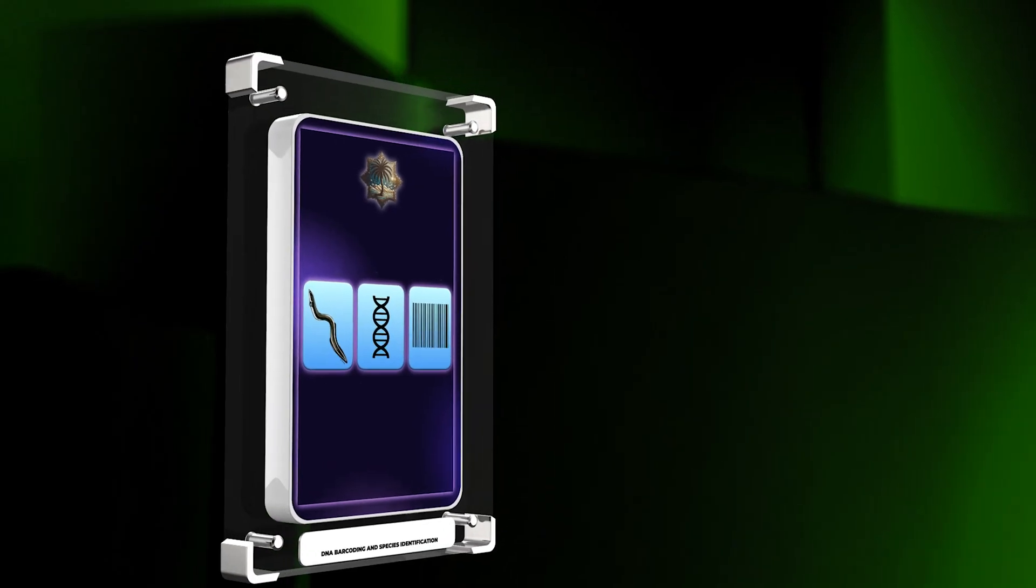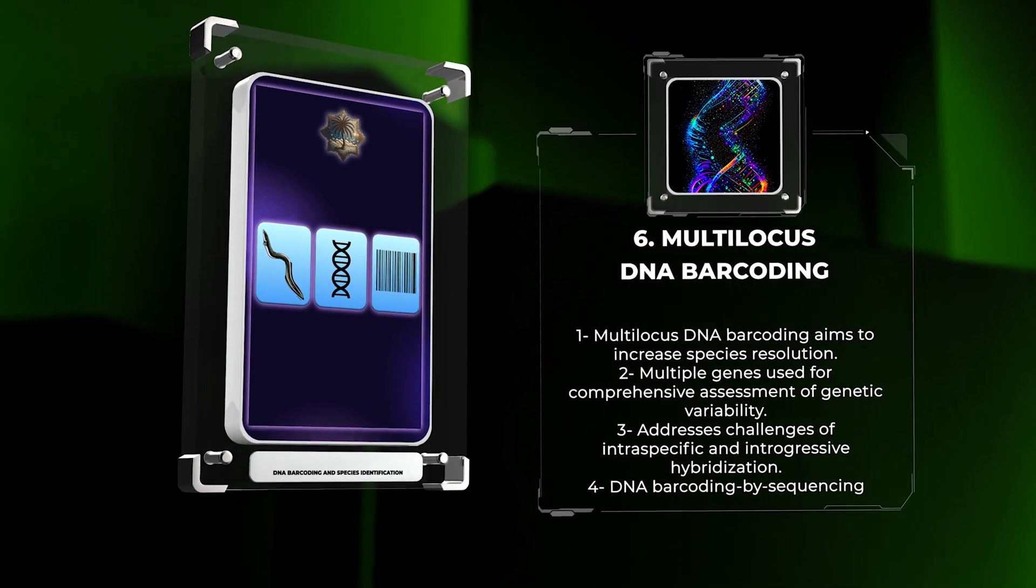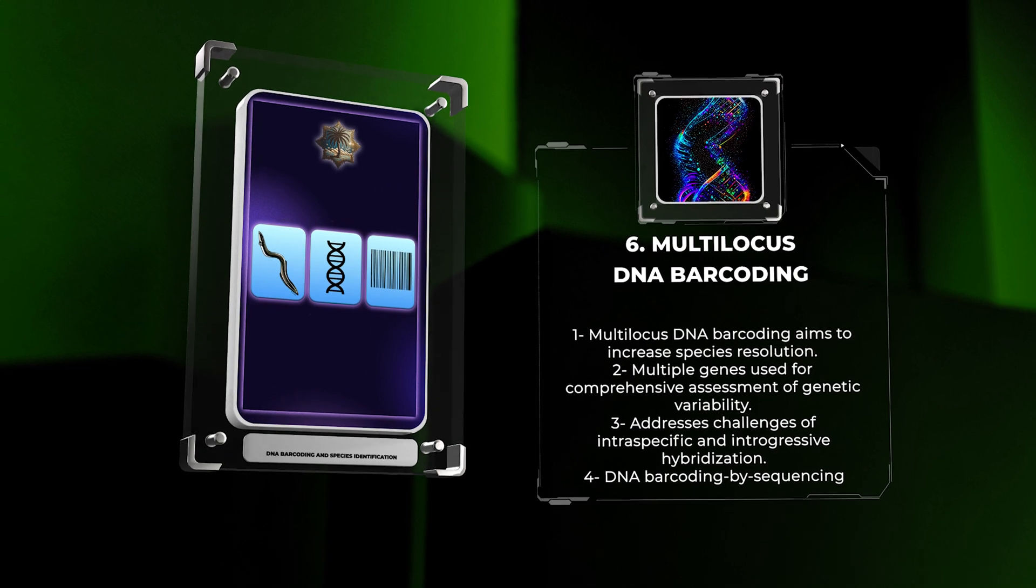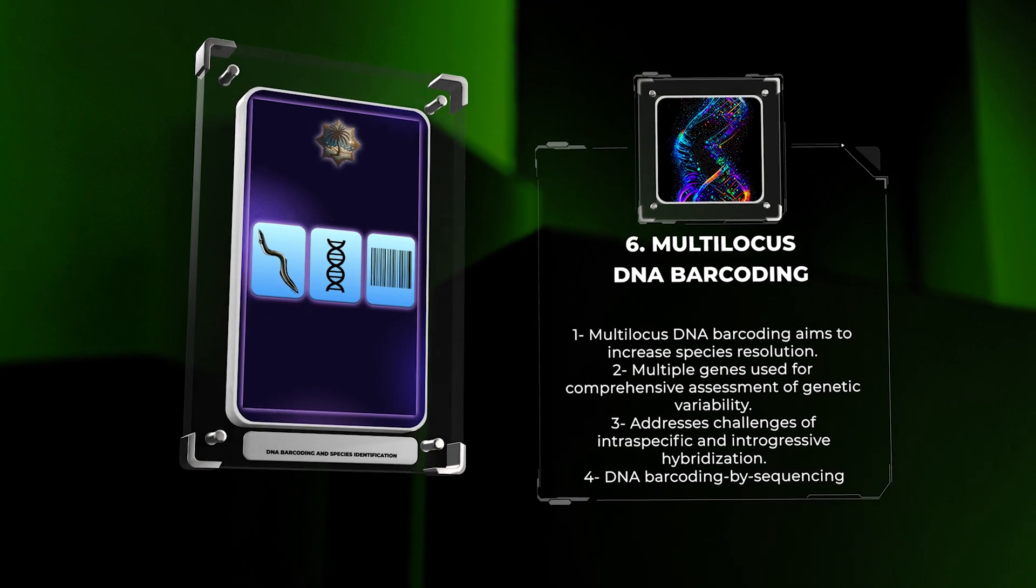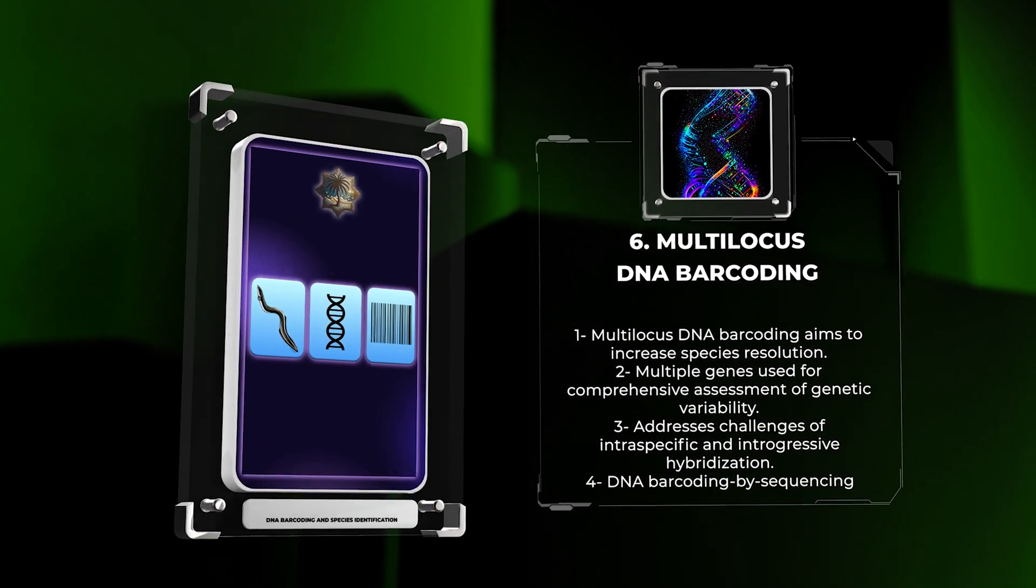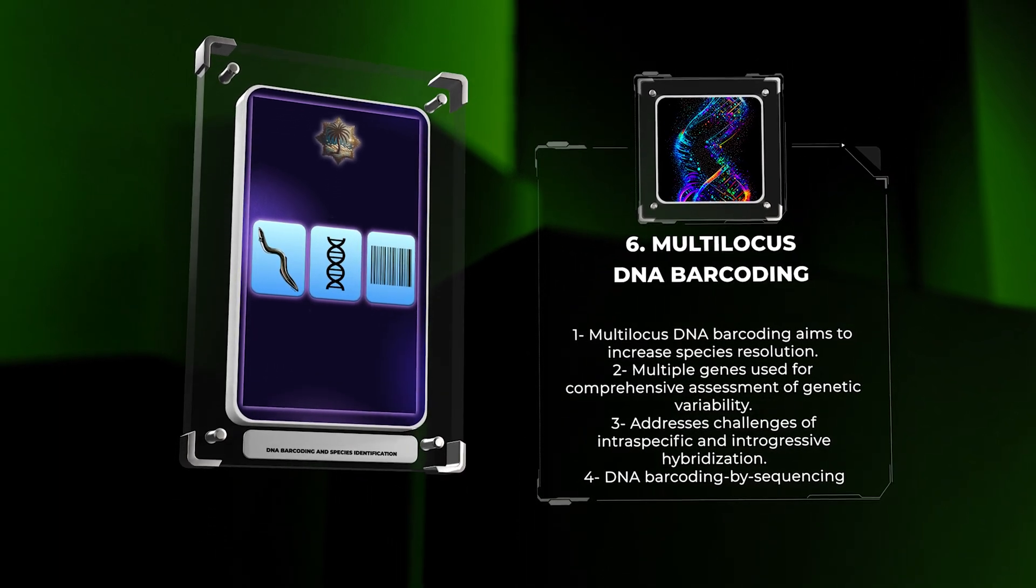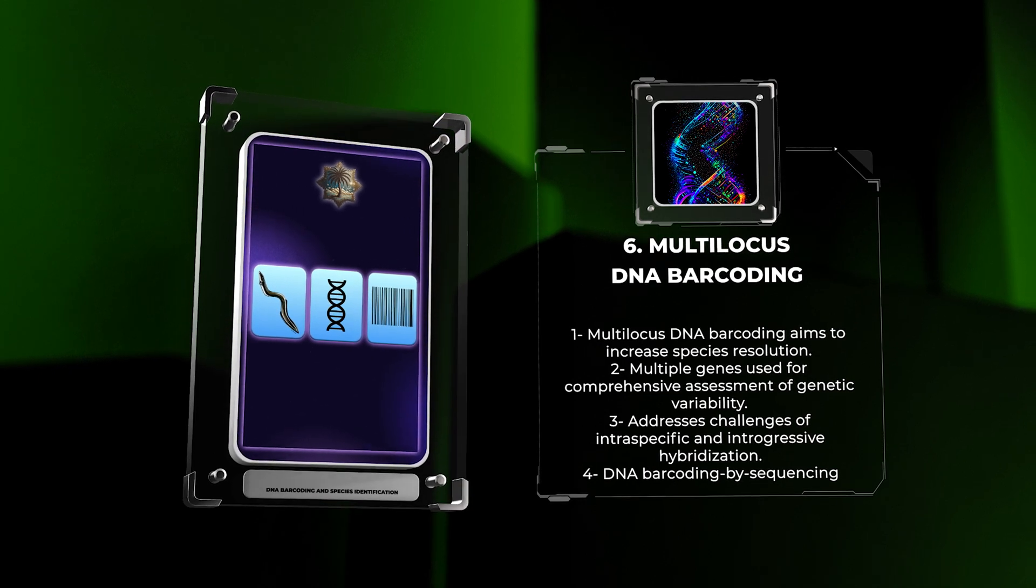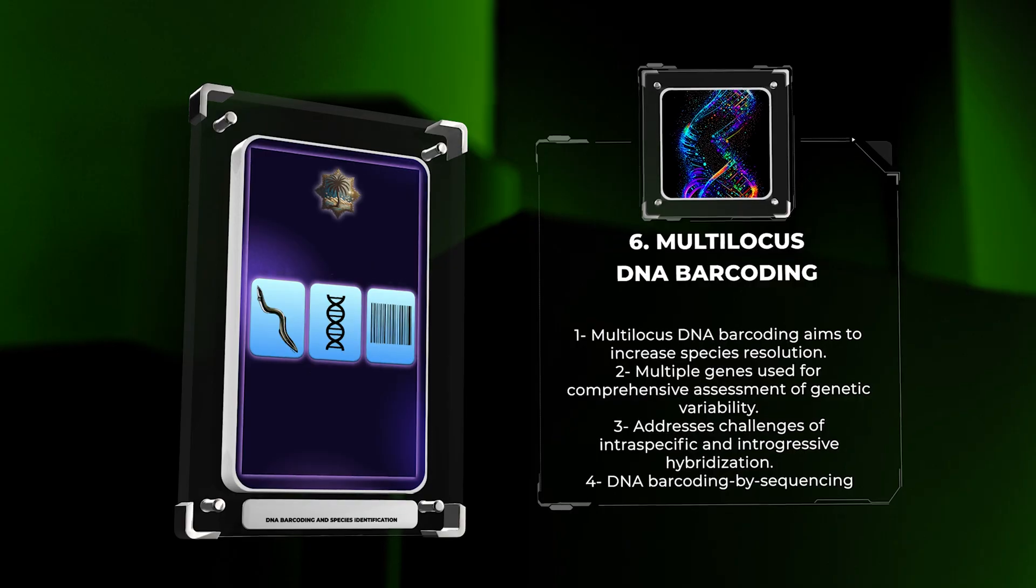Multi-locus DNA barcoding aims to increase species resolution by utilizing multiple barcode regions. Combining multiple genes allows for a more comprehensive assessment of genetic variability, addressing challenges posed by intraspecific variation and introgressive hybridization. It provides a better understanding of species boundaries and evolutionary relationships. The use of multi-locus barcoding approaches, such as DNA barcoding by sequencing, adds a layer of complexity but provides more accurate species identification in challenging taxonomic groups.